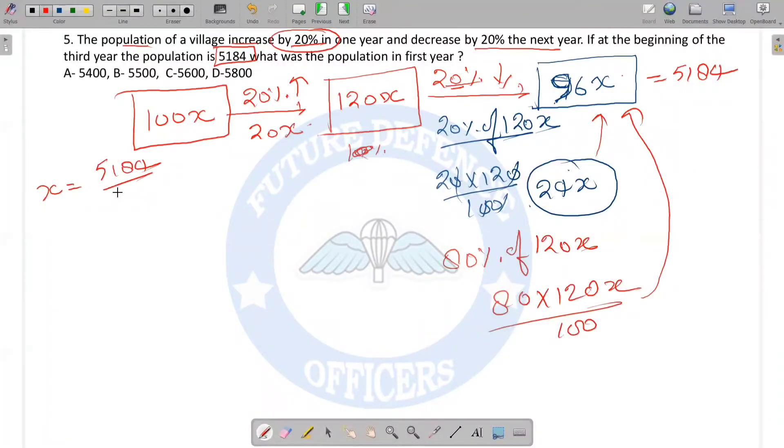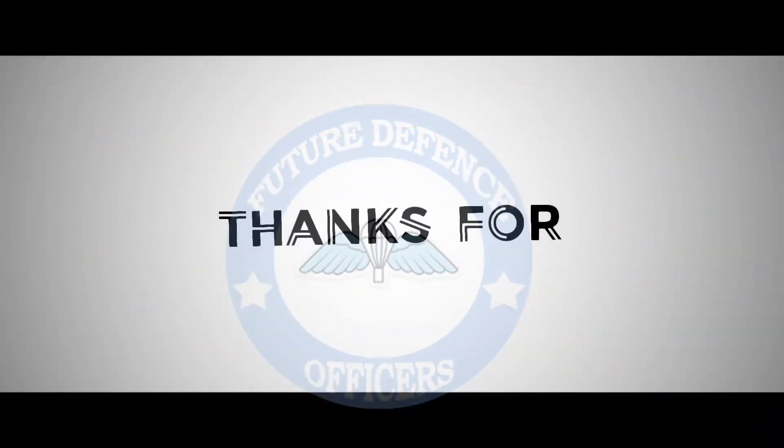x equals 54. We're getting x equals 54. So what was the population in the first year? The first year population was 100x, which means 5400. This was the population.